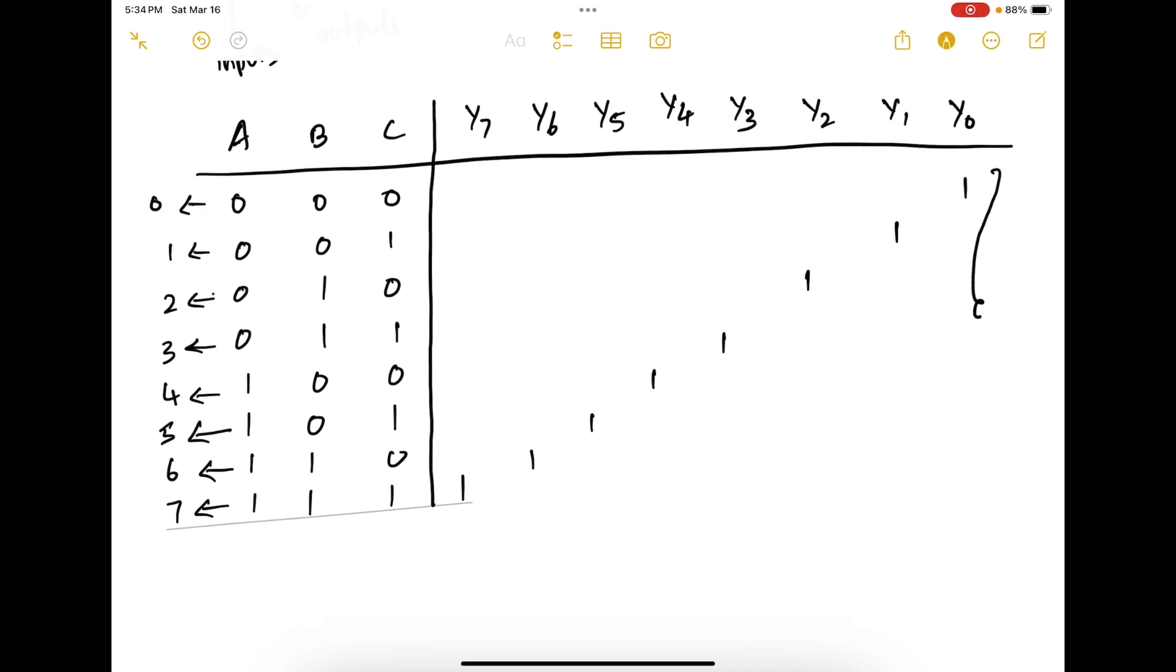You can see that only one output is asserted. So this is known as one-hot encoding. Since only one out of the eight outputs is asserted.